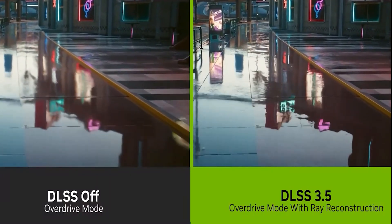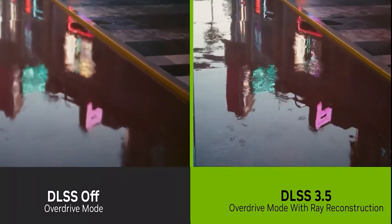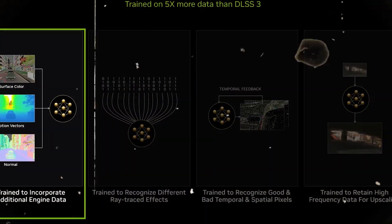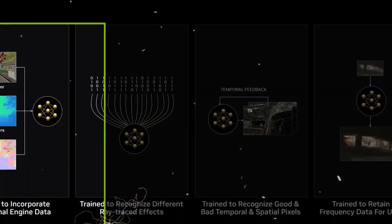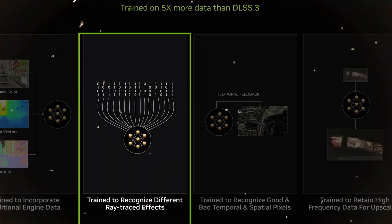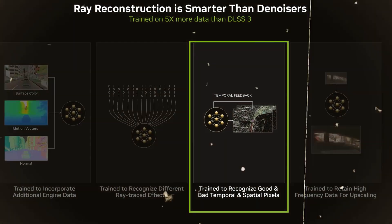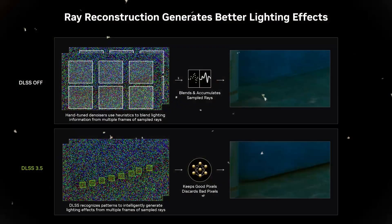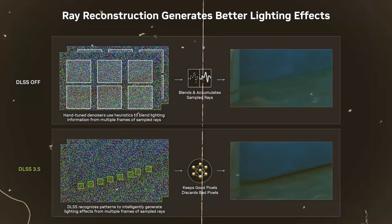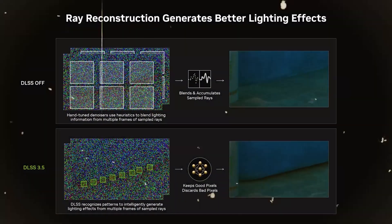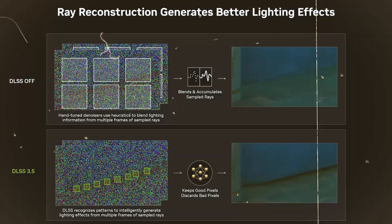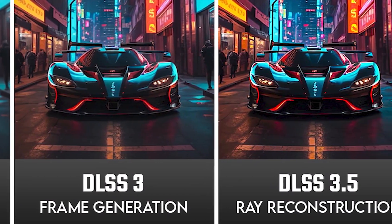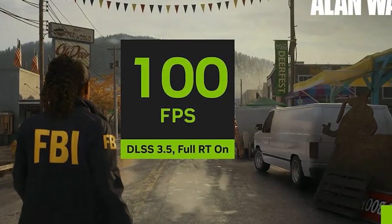The rationale behind DLSS 3.5 utilizing five times more data lies in the diversity of ray-tracing effects that the model must recognize and handle. We've trained this new DLSS model to recognize many different ray-tracing effects, to make smarter decisions about temporal and spatial information reuse, and to retain all the high-frequency data that's necessary for high-quality upscaling. The DLSS AI is trained on a huge dataset of images created using an offline rendering process with far more computation than could be available in real time, enabling it to make more informed judgments concerning spatial and temporal information reuse. Furthermore, it preserves all essential high-frequency data required for top-notch imaging.